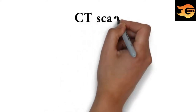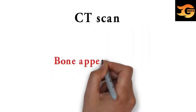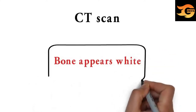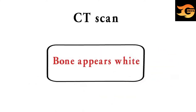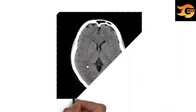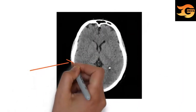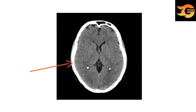First of all, CT scan. In CT scan, bone appears white, and that's the main differentiating point from MRI. This is the CT scan of brain. You can identify it as a CT scan because the skull bone is appearing white.